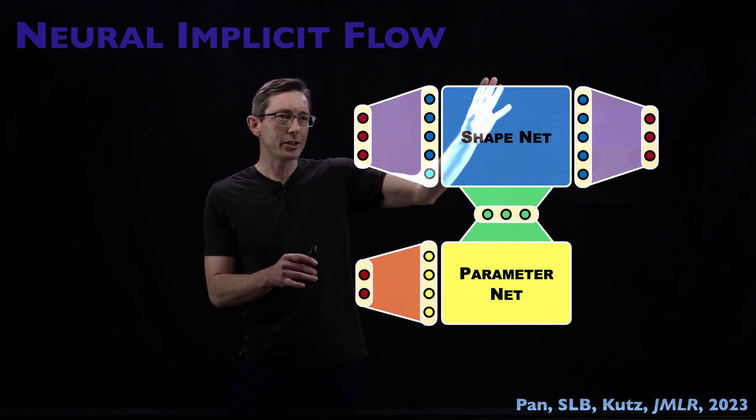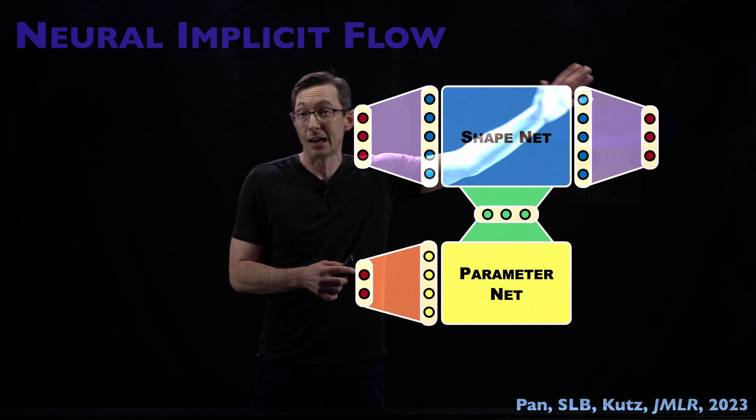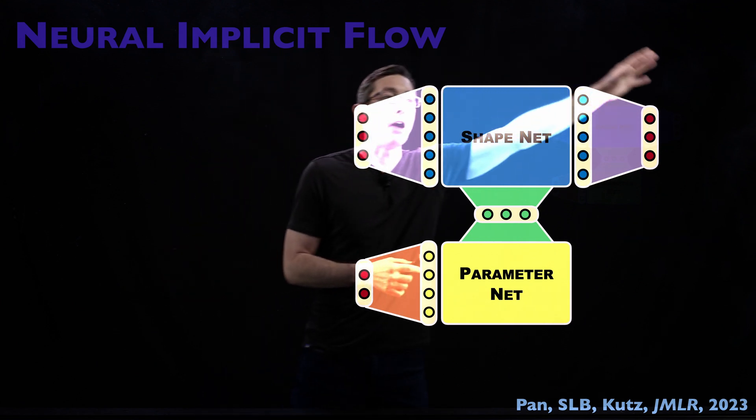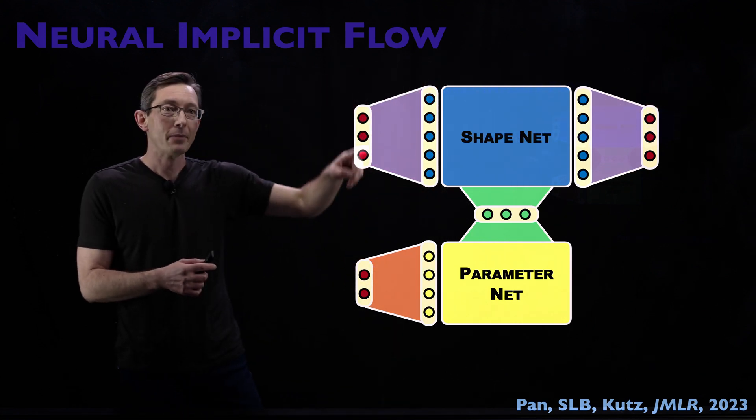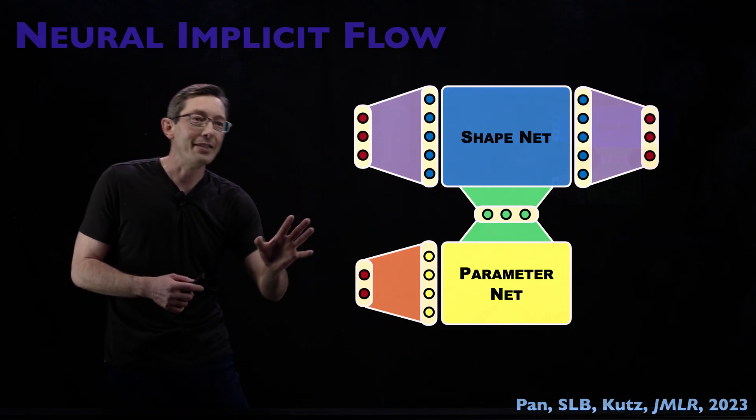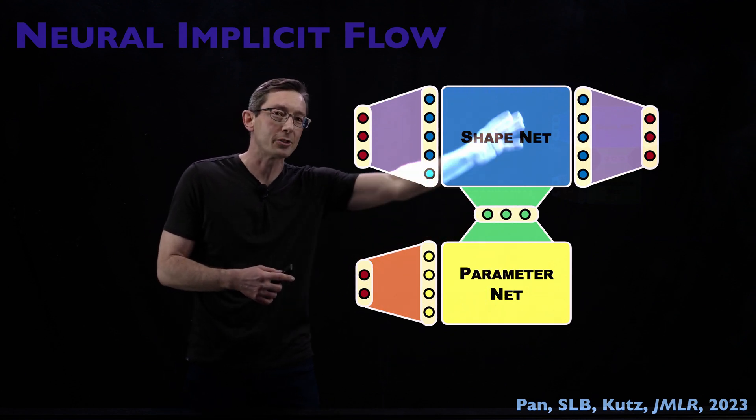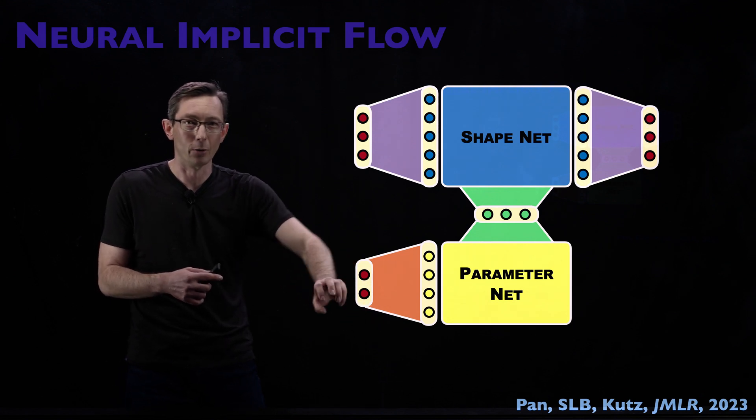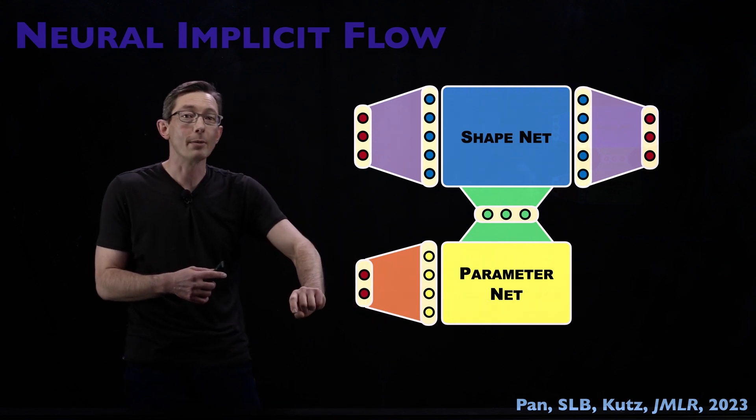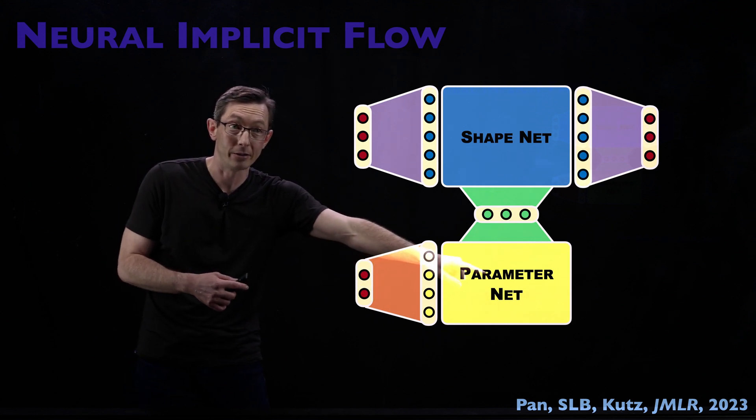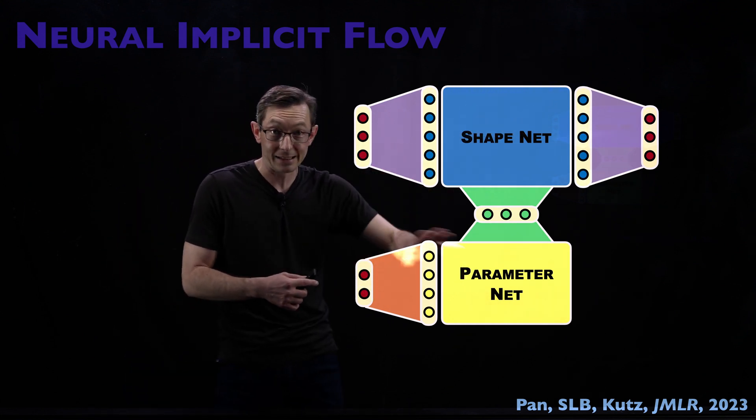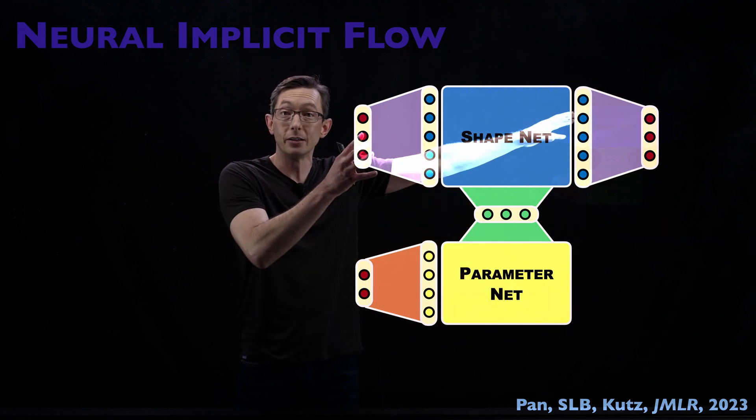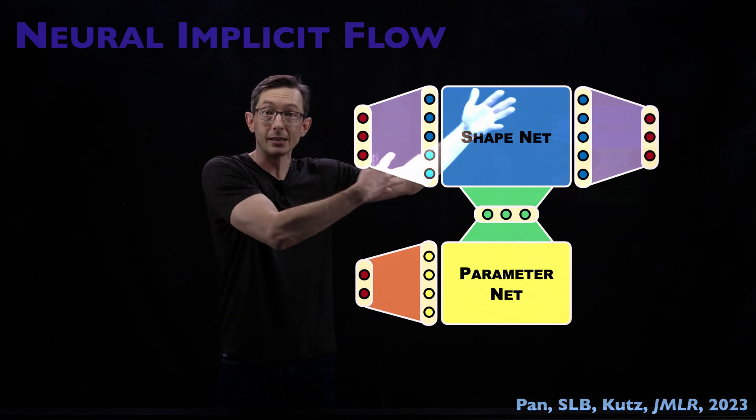So the idea of the Shape Net is that this is going to actually be a lot like a PINN kind of network. It's going to model some output field of interest, like some velocity field as a function of maybe space. And then this Parameter Network is going to parametrize that Shape Net with things like the Mach number and the Reynolds number of the fluid flow, or parameters that you can change in the system, or maybe time. And as time evolves and my solution changes, this Parameter Net will modulate the Shape Net so my solution function U of X changes in time.